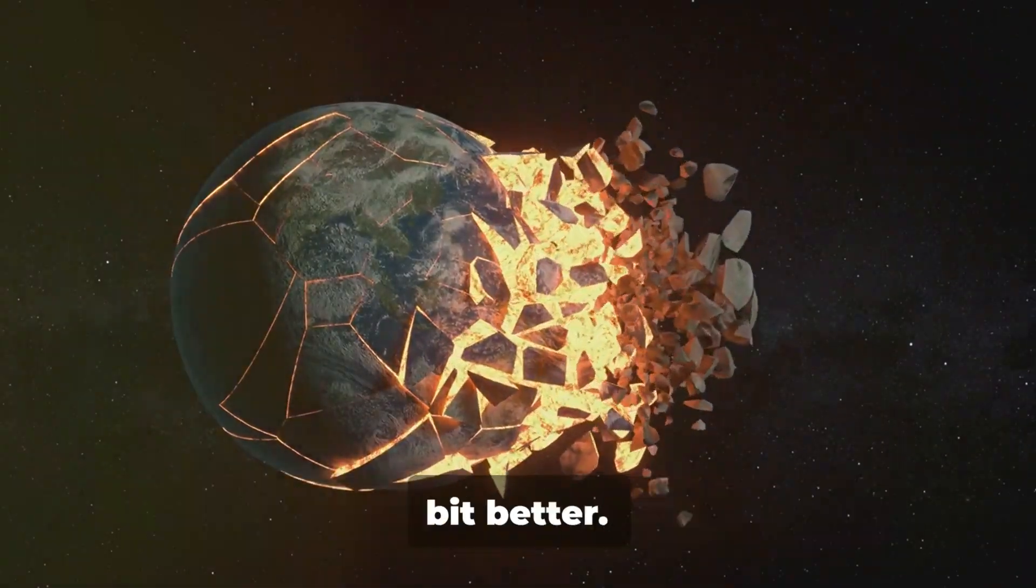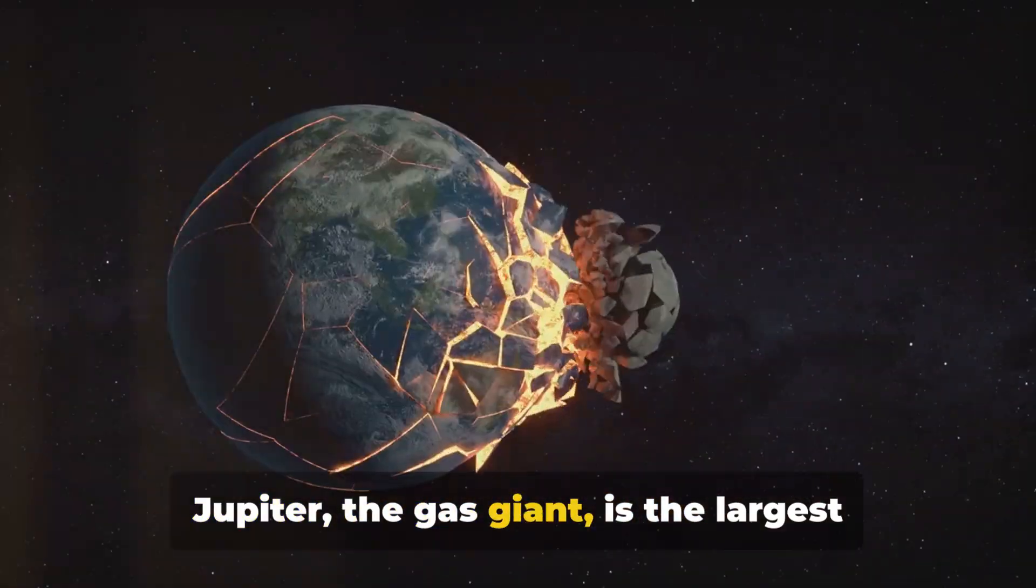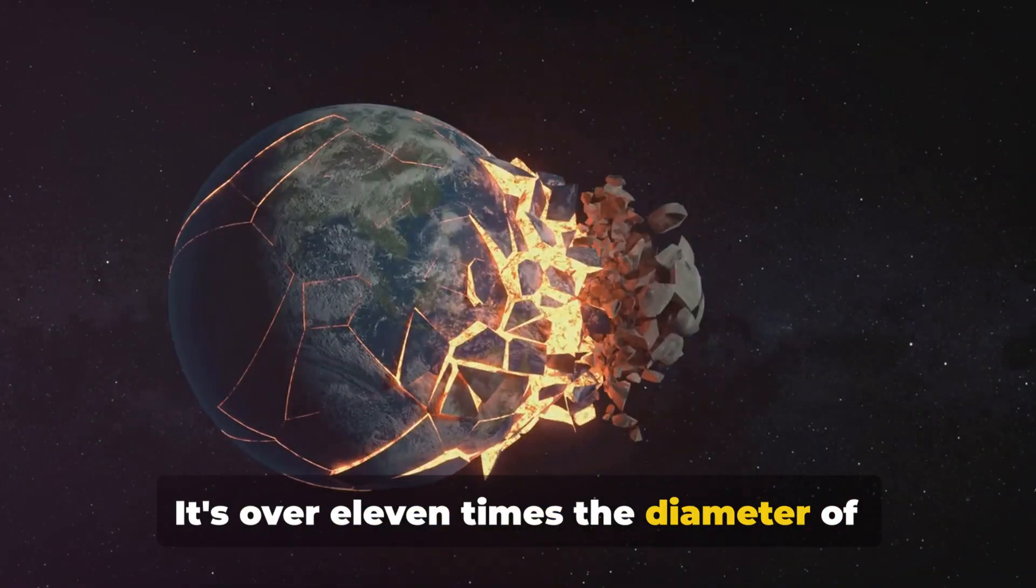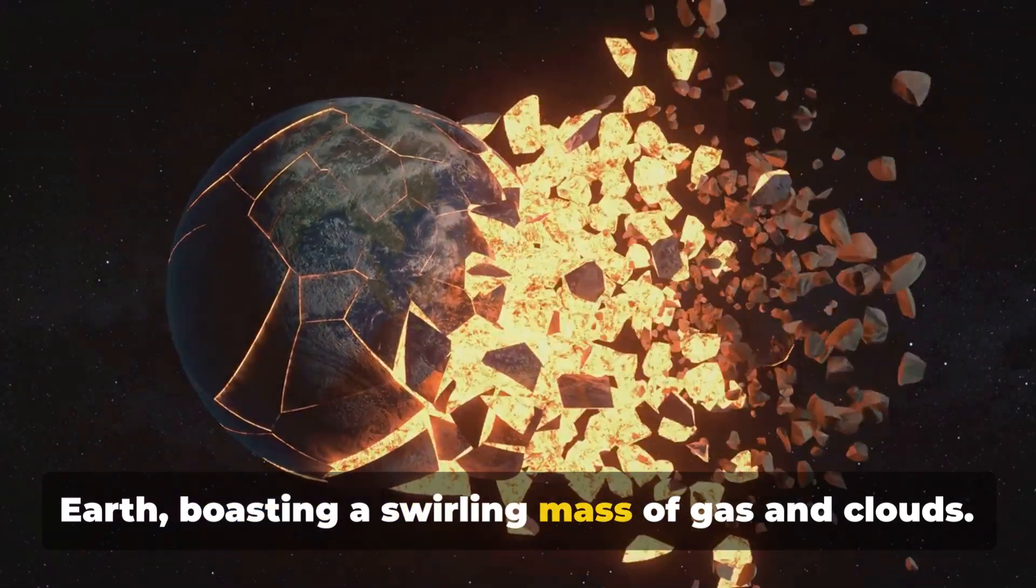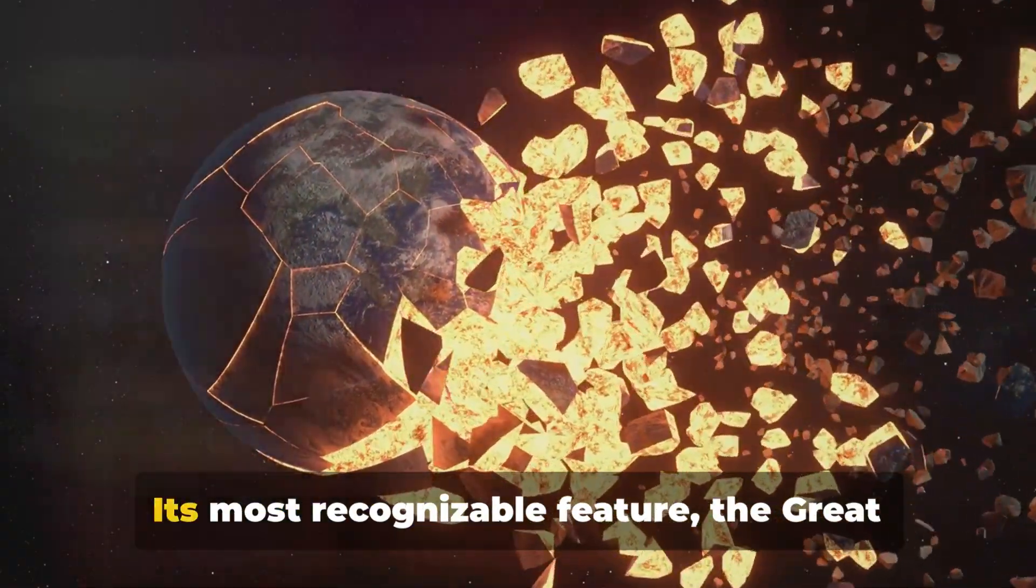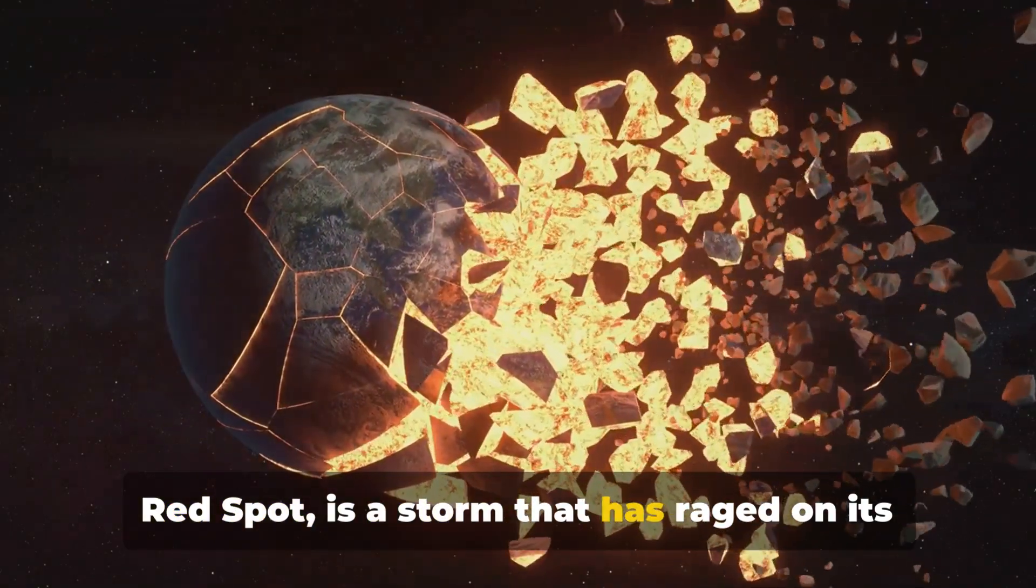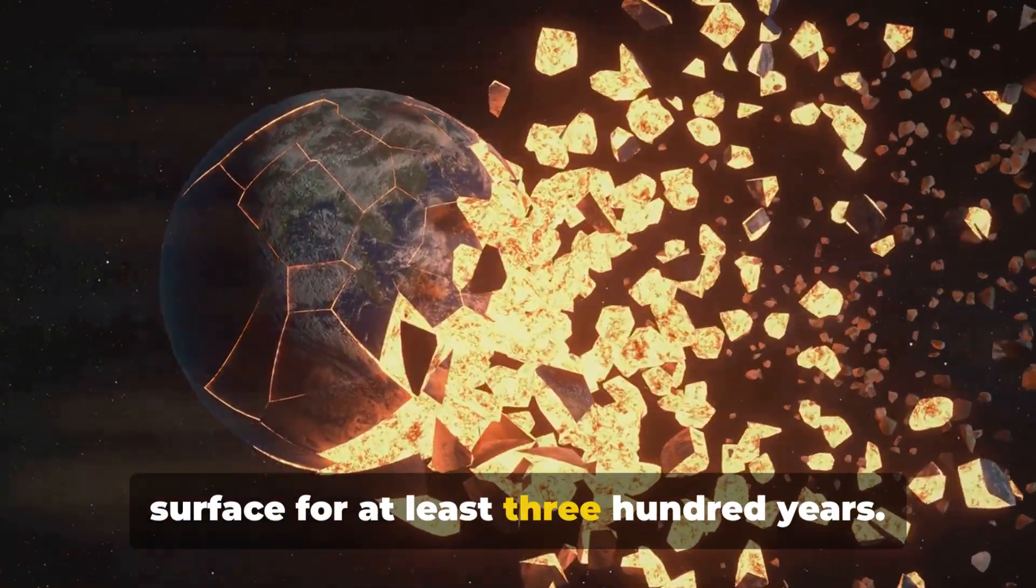Let's first get to know our behemoths a bit better. Jupiter, the gas giant, is the largest planet in our solar system. It's over 11 times the diameter of Earth, boasting a swirling mass of gas and clouds. Its most recognizable feature, the Great Red Spot, is a storm that has raged on its surface for at least 300 years.